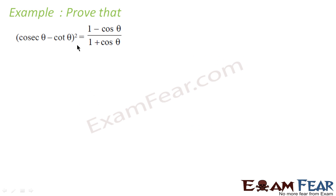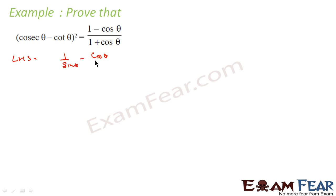For example, we need to prove that (cosec θ - cot θ)² = (1 - cos θ)/(1 + cos θ). We'll take the LHS first. Cosec θ is nothing but 1/sin θ, and cot θ is nothing but cos θ/sin θ. So the LHS is (1 - cos θ)² / sin² θ.